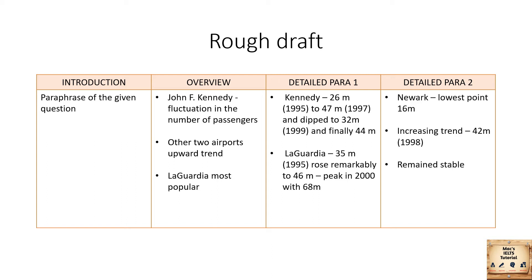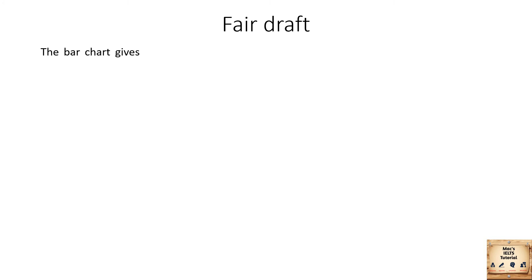In Detail Paragraph 2, I'm going to jot down the remaining features. Newark had its lowest point of 16 million; there was an increasing trend in its figures which reached 48 million in 1998, and it remained stable after that.